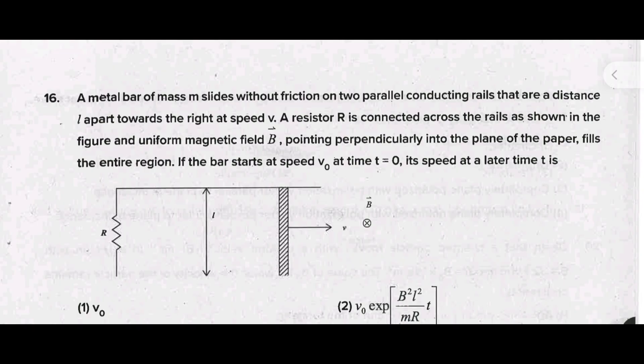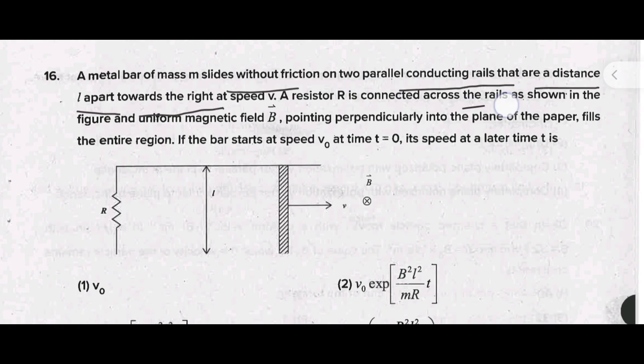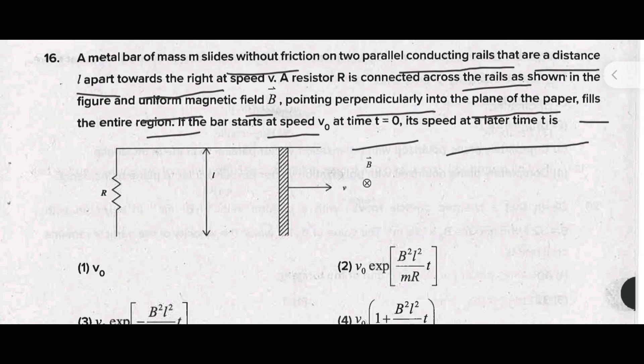Next one is: a metal bar of mass m slides without friction on two parallel conducting rails that are a distance L apart towards the right at speed V. A resistor R is connected across the rails as shown in the figure. A uniform magnetic field B pointing perpendicularly into the plane of the paper fills the entire region. If the bar starts at speed V naught at time T equal to 0, its speed at a later time is - the correct answer is option 3.